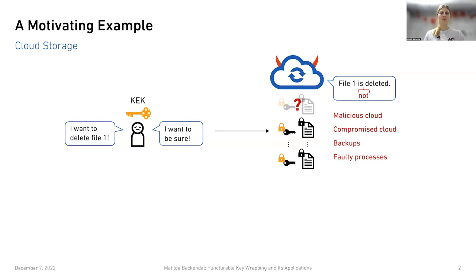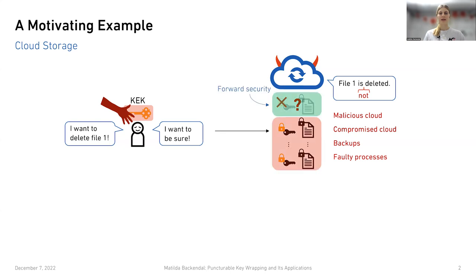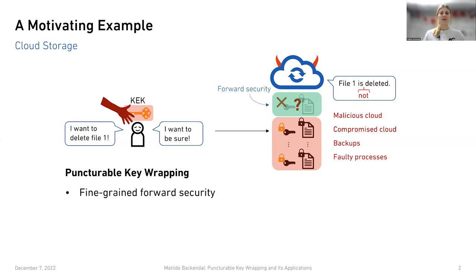So imagine that there was a way for you to make sure that your deleted files were completely gone without having to trust the cloud at all. For example, you could imagine there was a way to punch a hole in your key encryption key — to update it in such a way that it could no longer be used to unwrap the data encryption key corresponding to the file that you wanted to delete. Now, if your updated key encryption key was to be compromised, then your deleted file would be secure. This is exactly what puncturable key wrapping gives us: namely, fine-grained forward security in an efficient and generic way.